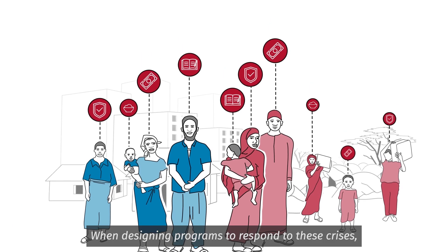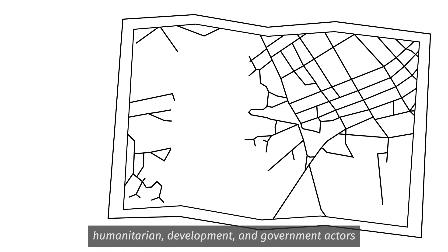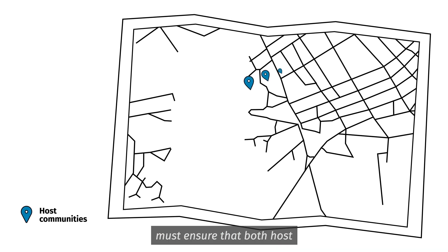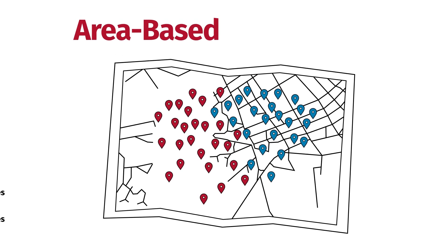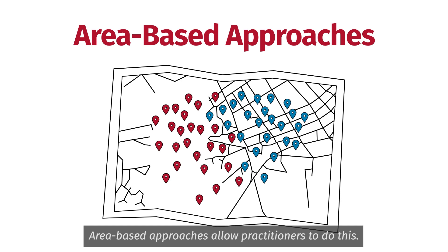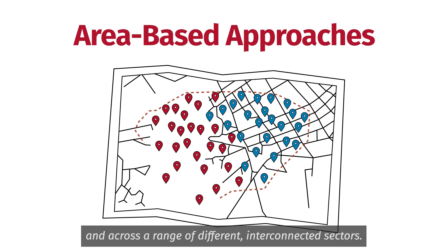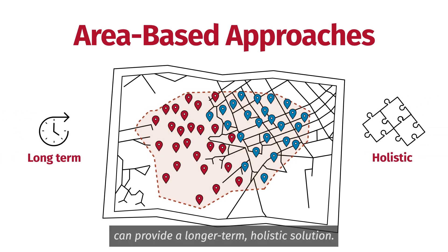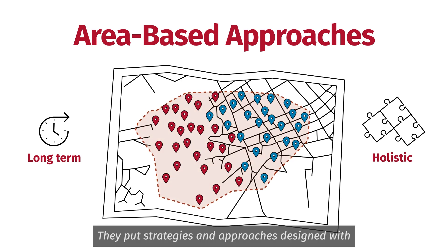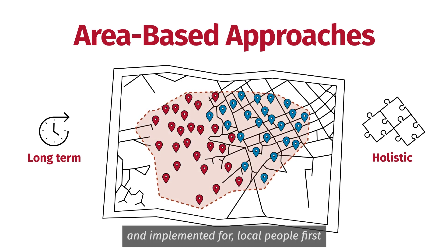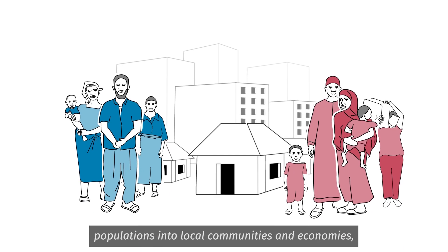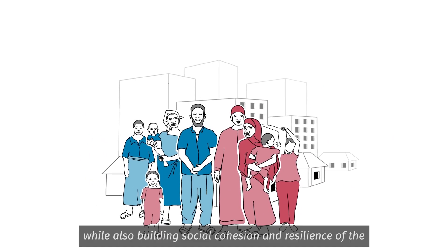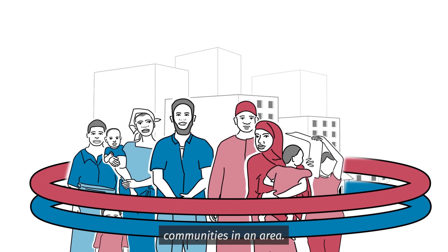When designing programs to respond to these crises, humanitarian, development, and government actors must ensure that both host and displaced communities are considered. Area-based approaches allow practitioners to do this — by considering the needs of people affected by a crisis within a specific geographical area and across a range of different interconnected sectors, area-based approaches can provide a longer-term holistic solution. They put strategies designed with and implemented for local people first, and projects coming from the outside second. They can promote the integration of displaced populations into local communities and economies, while also building social cohesion and resilience.